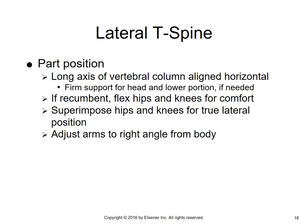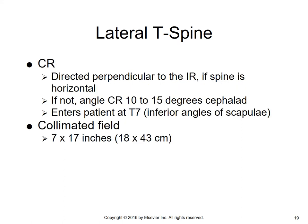For part positioning, the long axis of the vertebral column should be aligned horizontal with firm support for the head and lower portion if needed. If recumbent, flex the knees and hips for comfort, superimpose hips and knees for a true lateral, and adjust the arms at a right angle from the body. The central ray is perpendicular to the IR if the spine is horizontal; if not, use sponges under the lower thoracic region or angle 10 to 15 degrees cephalad. The central ray enters at T7, the level of the inferior angles of the scapula, using a narrow 7 by 17 collimated field. Techs will often place lead behind the patient's back to help absorb scatter radiation.